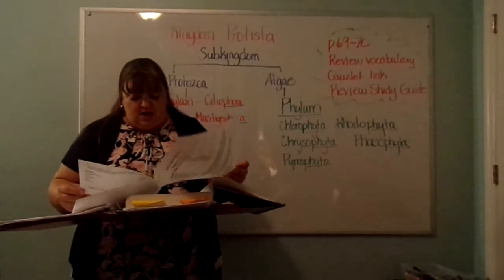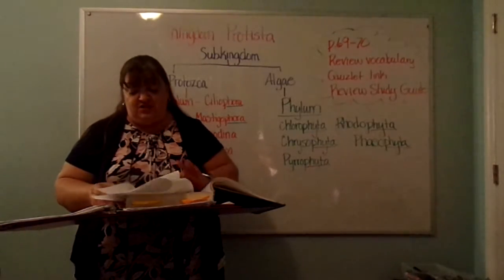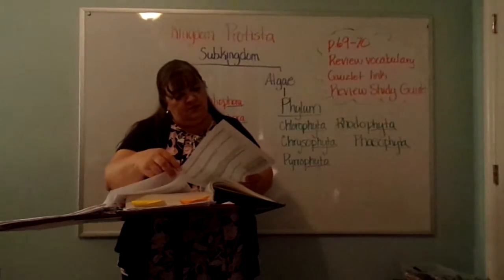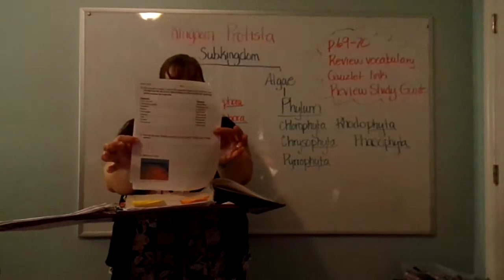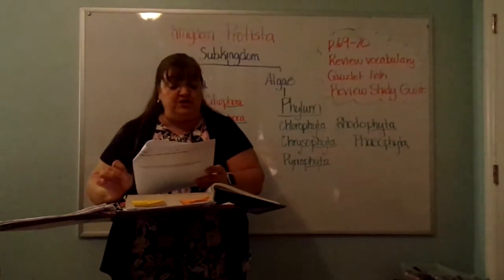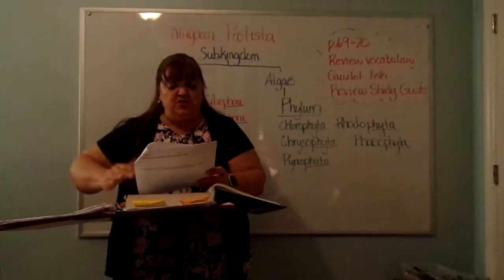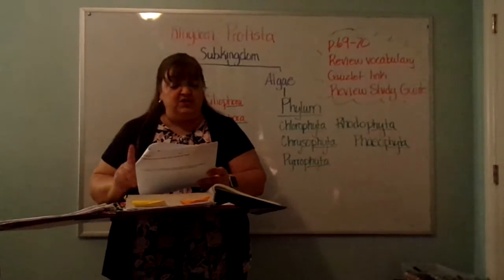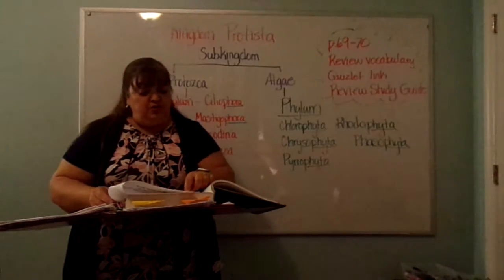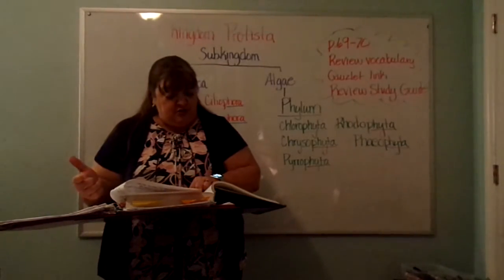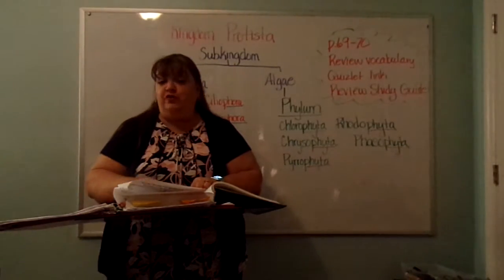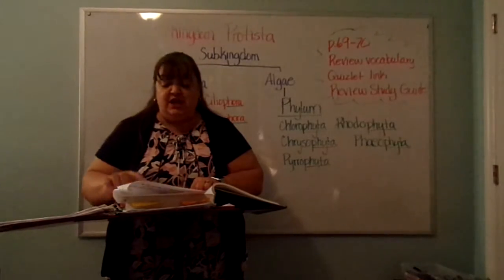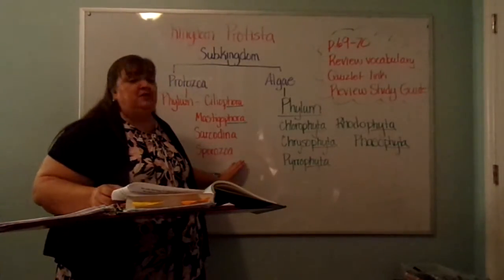I want you to particularly look in your study guide at number 16, which is on page 4 in your study guide. Number 16 says: give the main function of each of the organelles listed on the left. Also, choose from the list on the right at least one phylum that has organisms which possess the organelle. So you need to know what a food vacuole is, a contractile vacuole, flagellum, chloroplast, eye spot, cilia, nucleus, oral groove — and know which phylum has those objects.